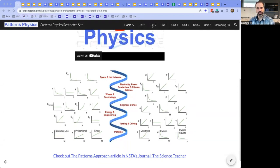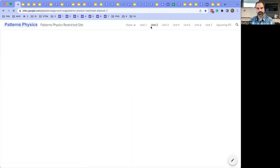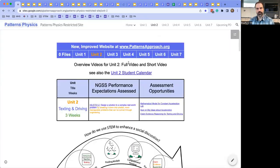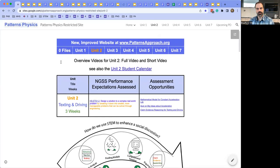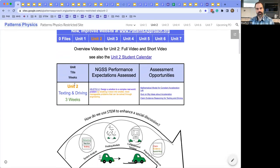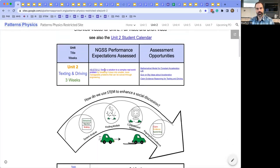So I am going to go to Unit 2 and now zoom in a little bit. So here we go. Unit 2 is going to focus on the performance expectation, design a solution to a complex real-world problem by breaking it down into smaller, more manageable problems that can be solved through engineering.